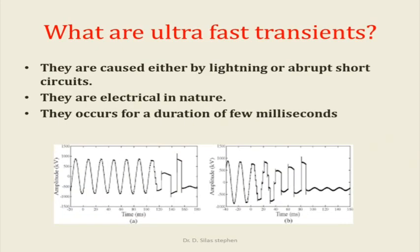What are ultra-fast transients? They are caused either by lightning or by short circuits. They are electrical in nature and occur for a duration of a few milliseconds.